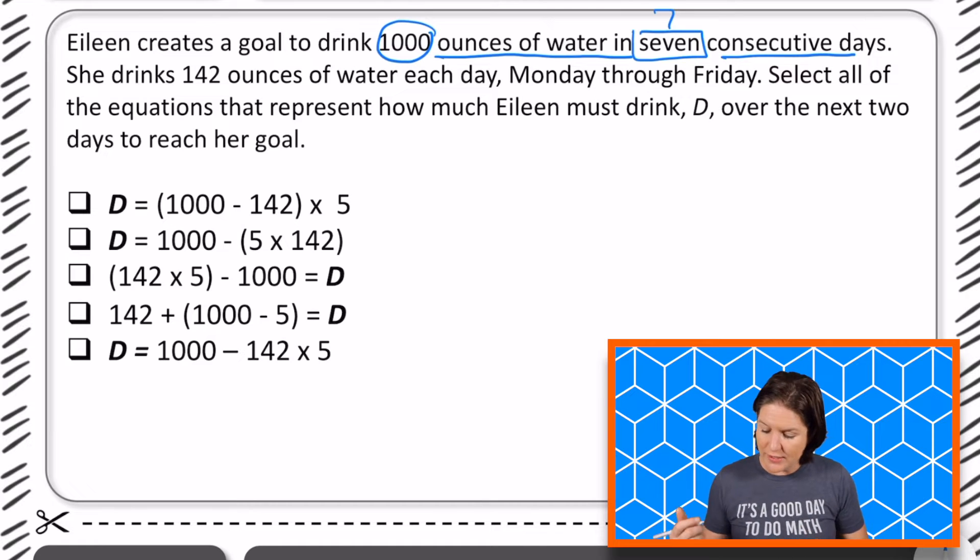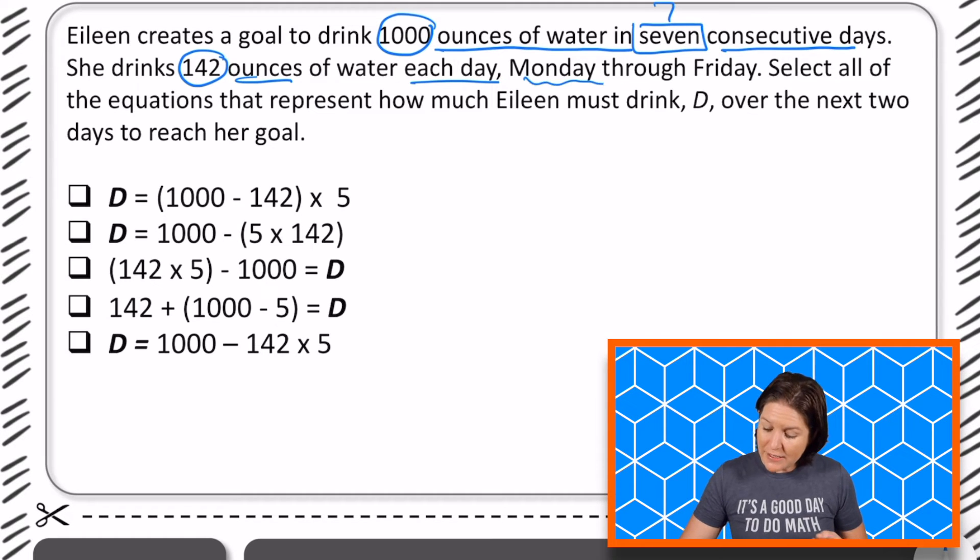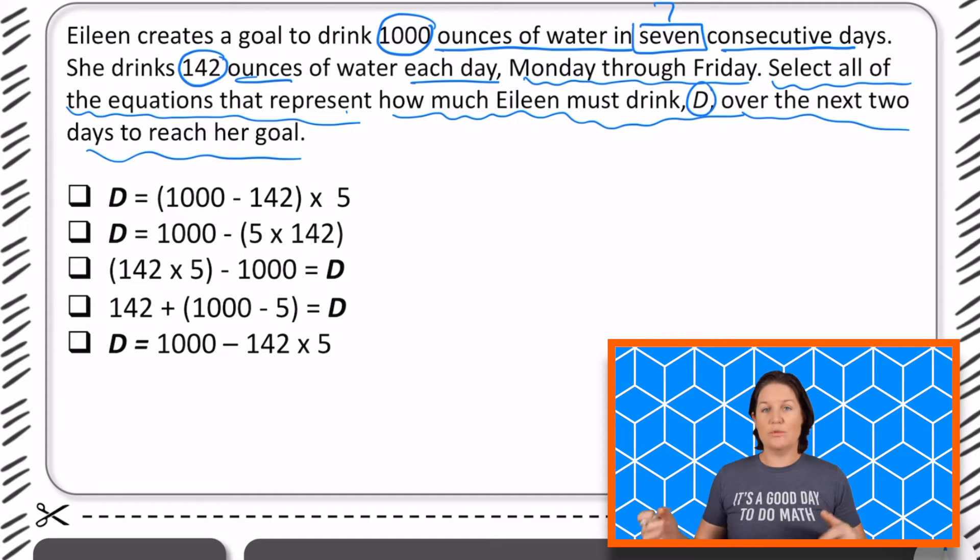Seven consecutive days. She drinks 142 ounces of water each day, Monday through Friday. Select all of the equations that represent how much Eileen must drink, which is D, over the next two days to reach her goal. Whoa, that's a lot of information. I need to draw this one in.